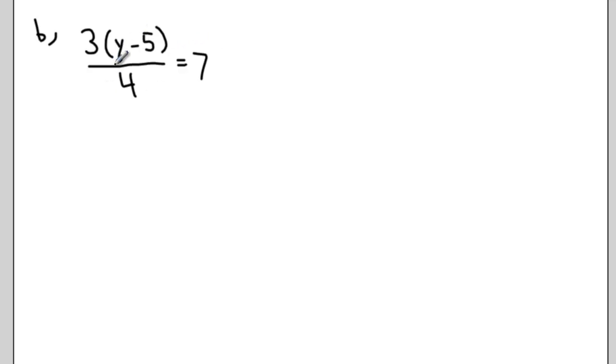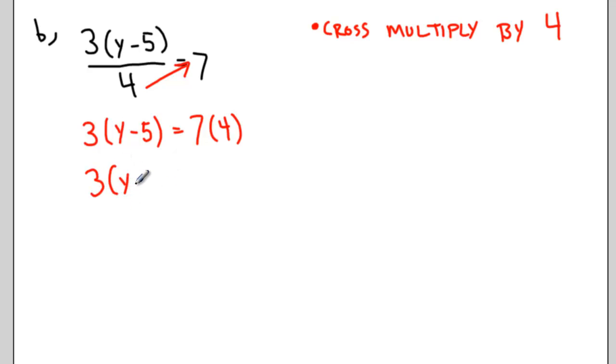Again I can simplify this by doing that cross multiplying by 4. So taking that 4 that's in the denominator and bringing it up and cross multiplying by 4. So I end up with 3 times y minus 5 in brackets equals 7 times 4 or 3 times y minus 5 equals 28.